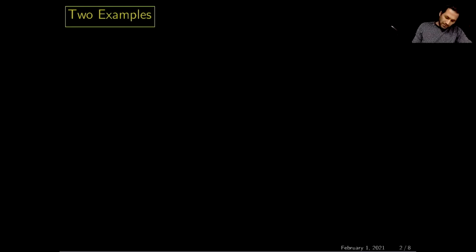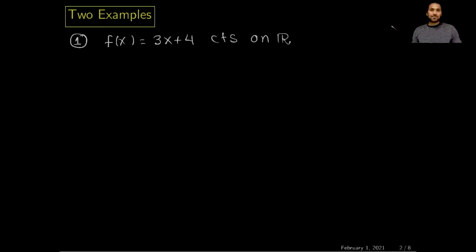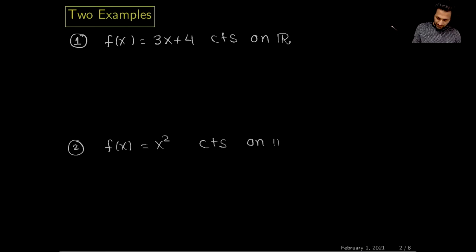First, we will consider example number one in which we will show that the function f(x) = 3x + 4 is continuous on the real line. In the second example, we will consider the function f(x) = x² and prove that this function is also continuous on the real line.